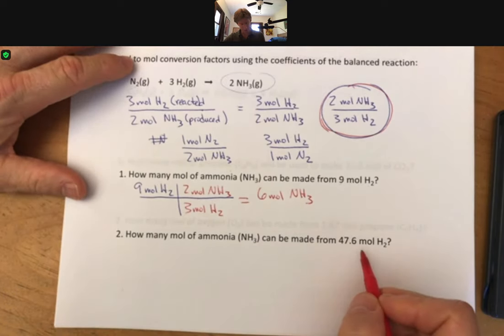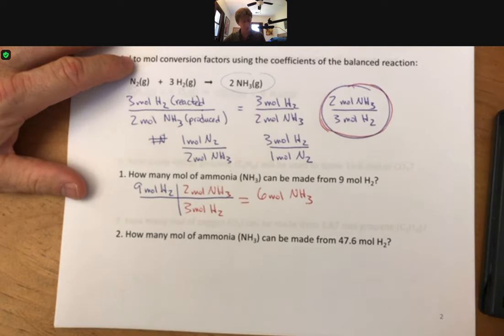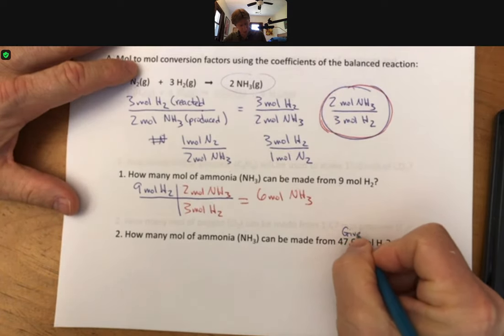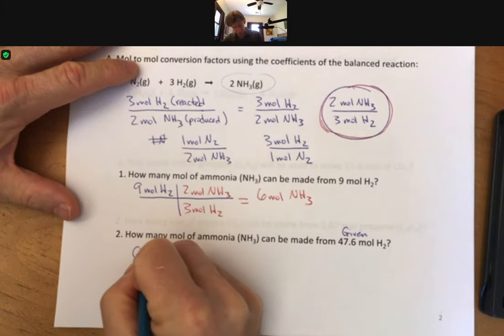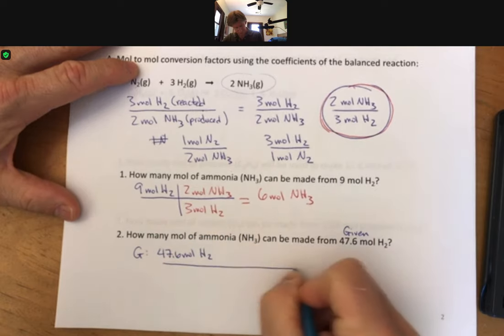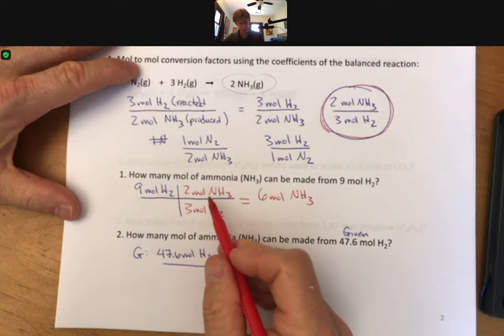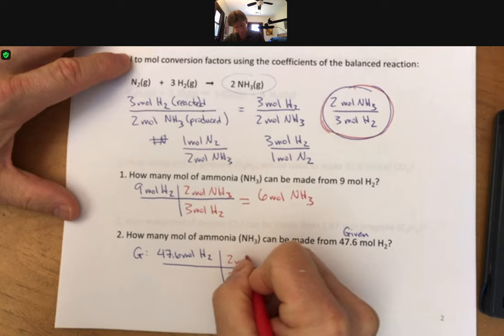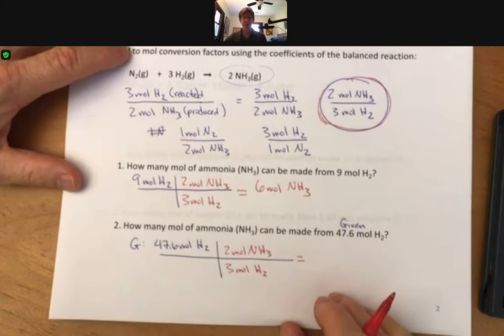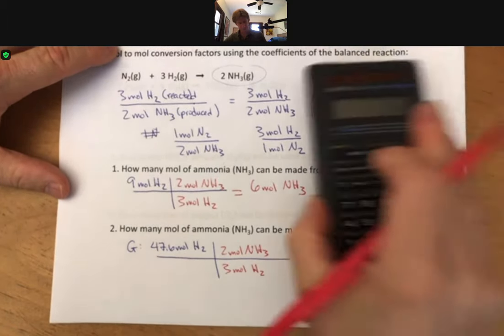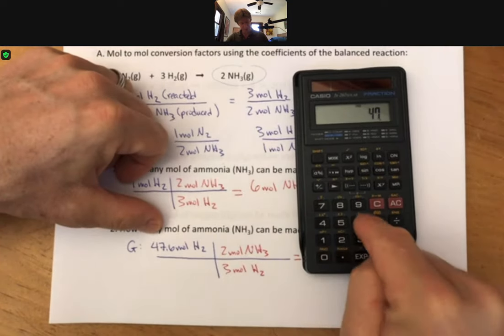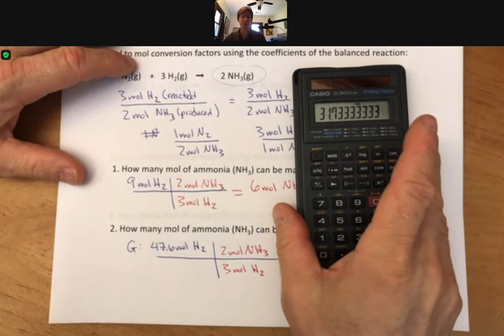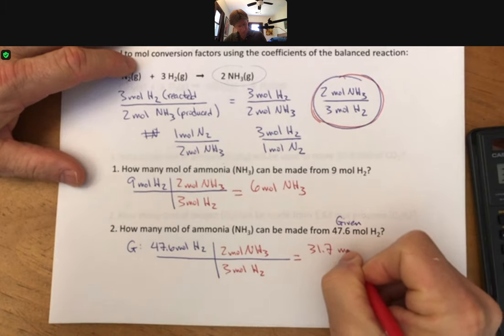And those are nice, even numbers. Usually, we won't be dealing with nice, even numbers like in this problem. And this time, it'll be how many moles of ammonia can be made from 47.6 moles of hydrogen. Like we've said before, this is going to be our given number. And it's our starting point, just like we did in the previous example. So our given is going to be 47.6 moles of hydrogen. We're going to be using the same mole-to-mole ratio using coefficients that we did for the last problem. And while the numbers are different, the process is the same. We'll multiply the two numbers on the top, divide by the number on the bottom. We have 47.6 times 2 divided by 3. And I get 32, 3 sig figs,